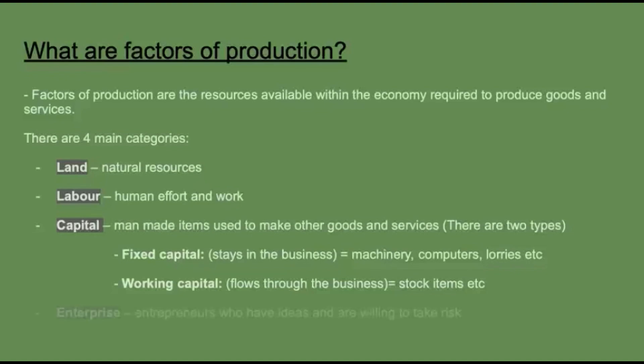The final factor of production is enterprise — these are entrepreneurs who have ideas and are willing to take risk, someone like Jeff Bezos for example. In an economy these are all of the different factors of production. When an economy is most efficient, all of these will be used at a perfect amount and there will not be any unemployment of these resources.